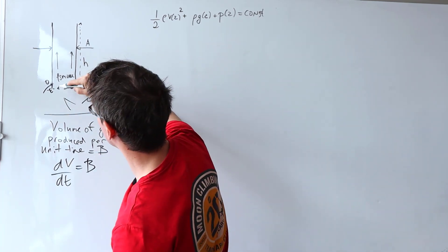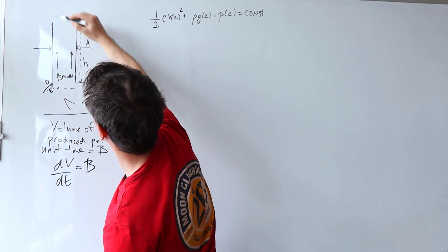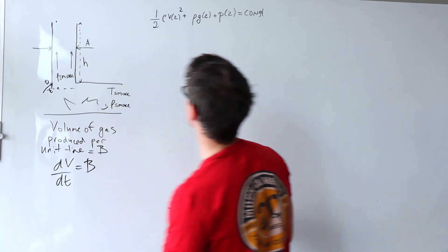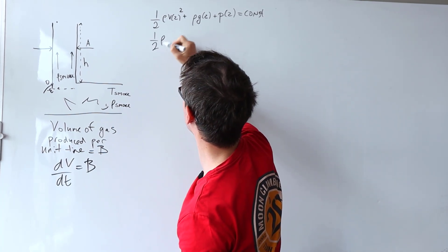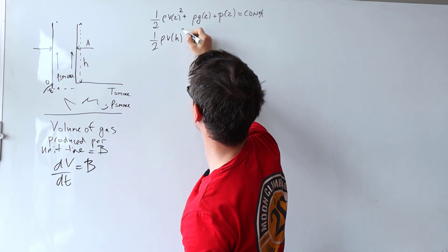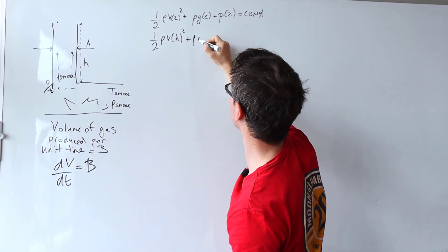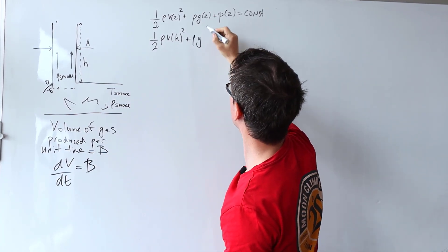Okay, so on a streamline we're going to apply Bernoulli's equation first at this point and then at height h. So this in turn will turn this equation into a half rho V at height h squared plus rho g multiplied...